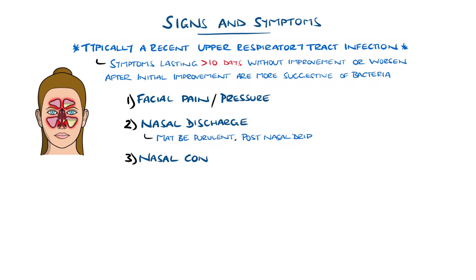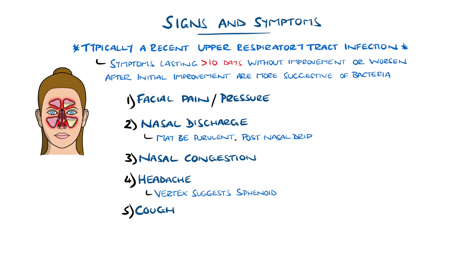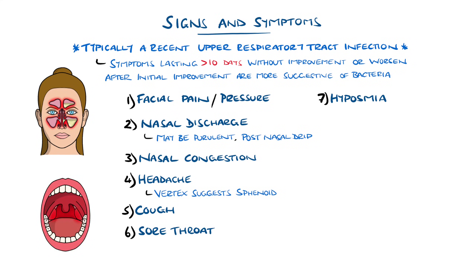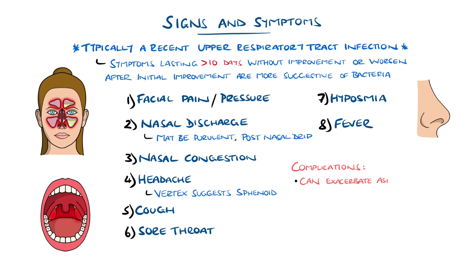Additional symptoms include nasal congestion, headache — with vertex headache being suggestive of sphenoid sinusitis — cough, sore throat, hyposmia meaning reduction in the ability to smell, and fever. Note that rhinosinusitis can lead to an exacerbation of asthma, and complications, although rare, can include fungal infections, facial cellulitis, and orbital or intracranial infections.